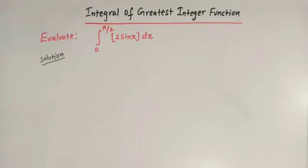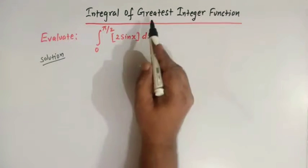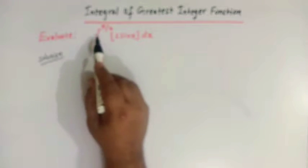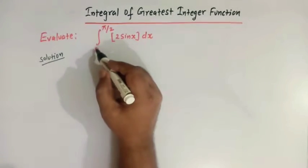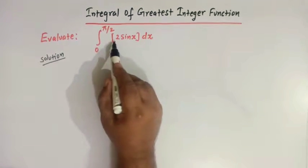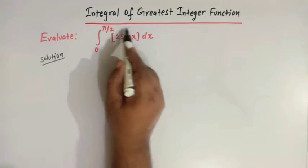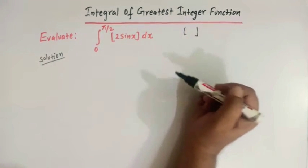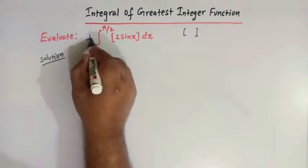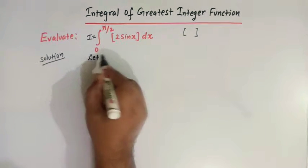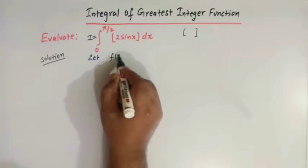Hello viewers. In today's class we are going to solve one important definite integral involving the greatest integer function. We have to evaluate this definite integral from 0 to π/2 of ⌊2sinx⌋. This symbol denotes the greatest integer function. Let us call this integral as I.